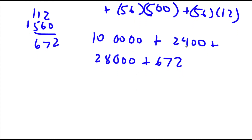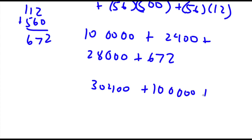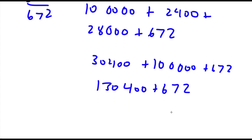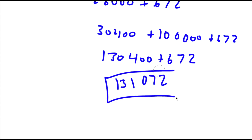Now adding these up: 2,400 plus 28,000 is 30,400. Then 100,000 plus 30,400 is 130,400, plus 672, and this gives us 131,072. So that is our answer.